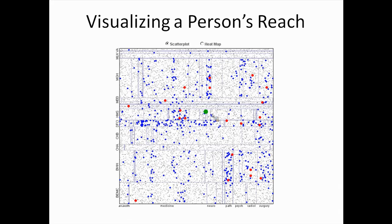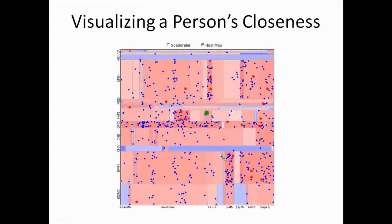I'm typical of biomedical informatics researchers and statisticians in that I have collaborators all over the university — I know people in a lot of different types of departments and different schools at Harvard. I do have some clusters: I've done a lot of work in pathology at Mass General, the Brigham, and at Dana-Farber. I also have some gaps — holes where I haven't really worked in certain departments.